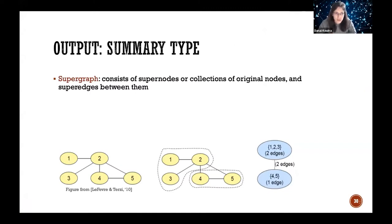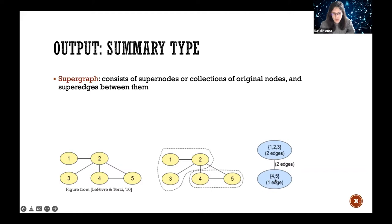Revisiting summary types: the super graph representation you'll see throughout this talk aggregates nodes into super nodes. Starting with a small graph of five nodes, we group three nodes into one super node and the other two into another, with a super edge between them that maps to the number of edges between the constituent nodes. This is a very common representation.